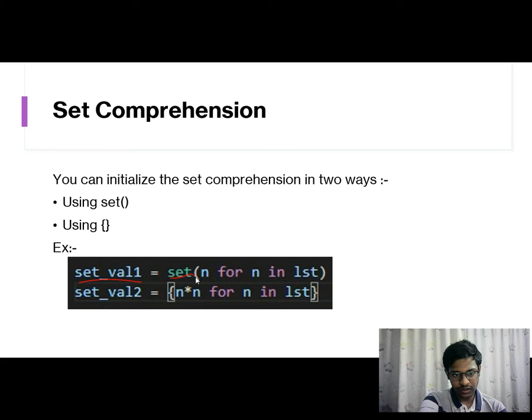set_val1 = set(n for n in list). We initialize the set and we are collecting values. This n will be saved in the set and these values in the form of sets are stored in this variable. First the for loop will execute and if you notice, we don't have to use colon after the for loop. Colons are not required.